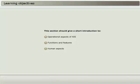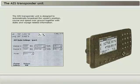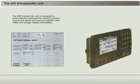The AIS transponder unit is designed to automatically broadcast the vessel's position, course, and speed over ground, together with static and voyage-related information. After activation, an automatic built-in integrity test, or BIIT, is performed. In case of malfunction, an alarm is given and the unit should stop transmitting.